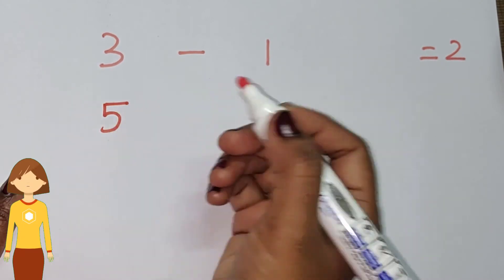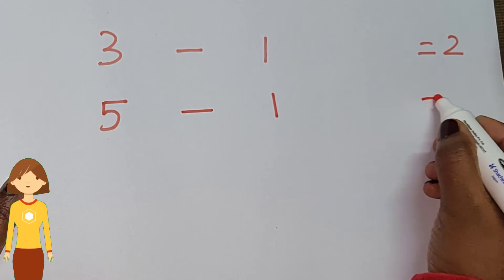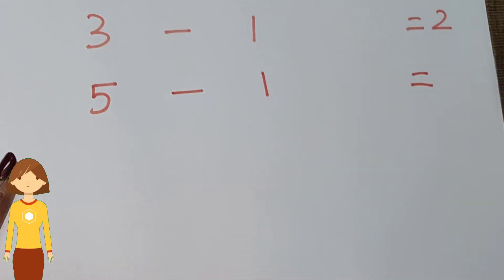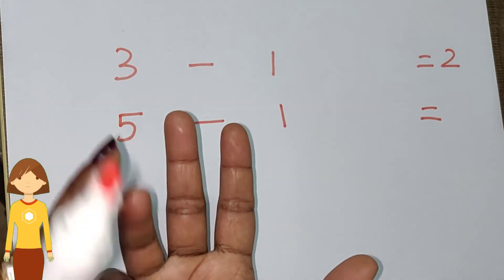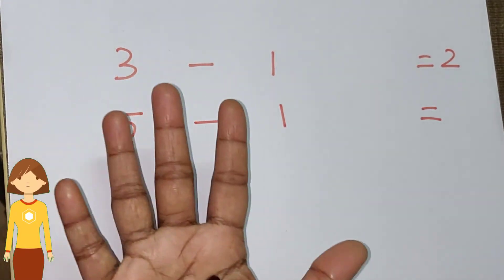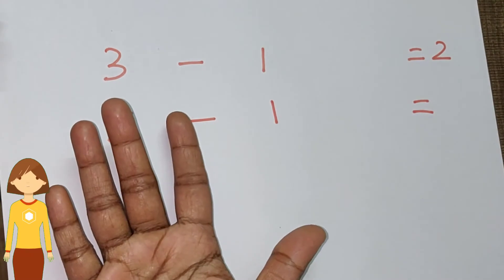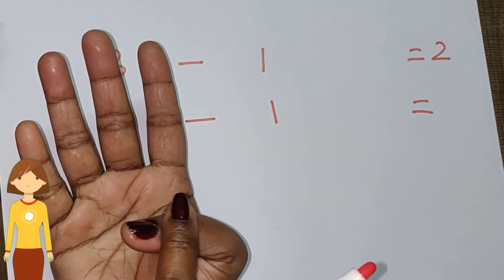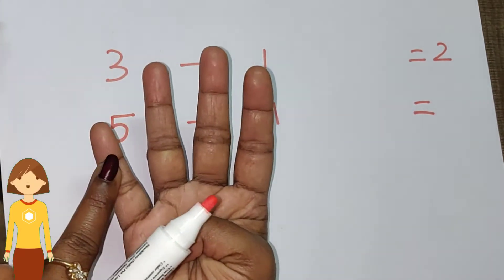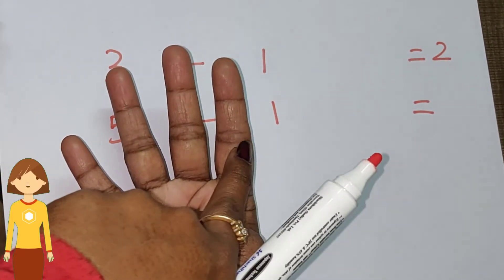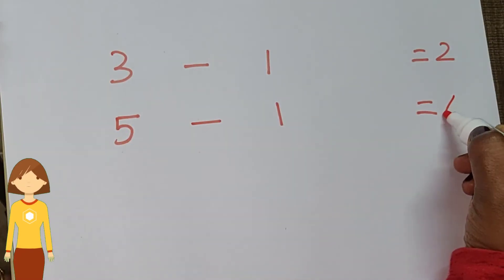Next problem: five minus one is equal to dash. Five I am going to have in fingers — one, two, three, four, five. Minus one, so I close one finger. Remaining fingers: one, two, three, four. So the answer is four.